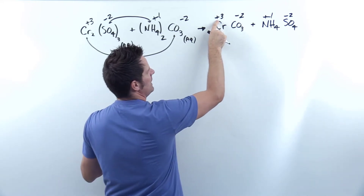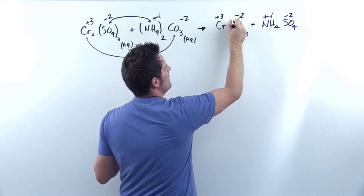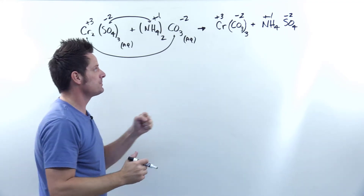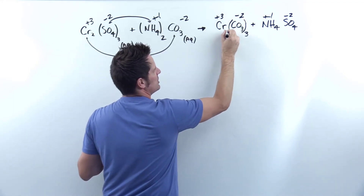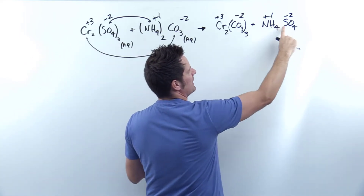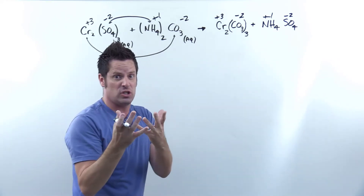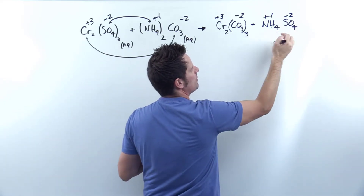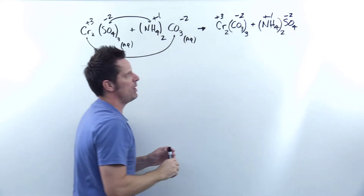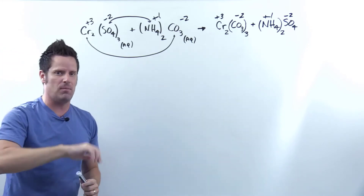Chromium has a +3 charge, so the 3 comes down as the subscript for carbonate on the right — and whenever you put a subscript next to a polyatomic, you must wrap parentheses around it. By analogy, the 2 comes down as the subscript for chromium. On the other side, the 1 becomes the subscript for sulfate, but we don't write 1s — they're understood. The 2 comes down as the subscript for NH4, which also gets parentheses. All subscripts are now placed correctly. That is the end of Step 1.